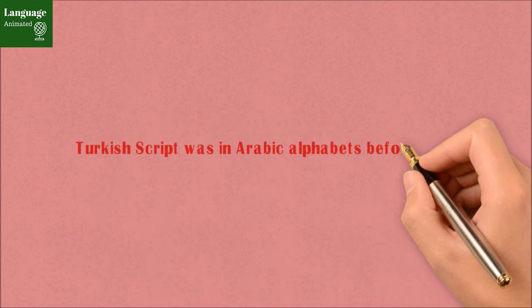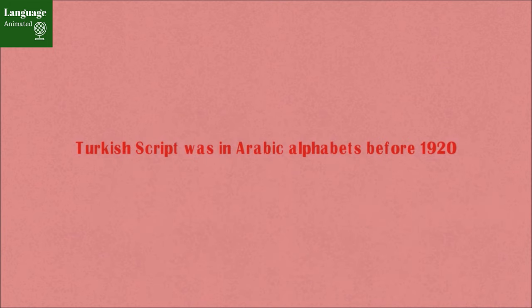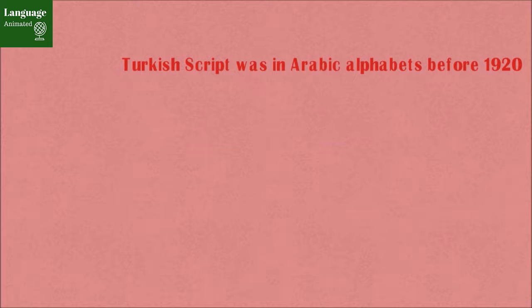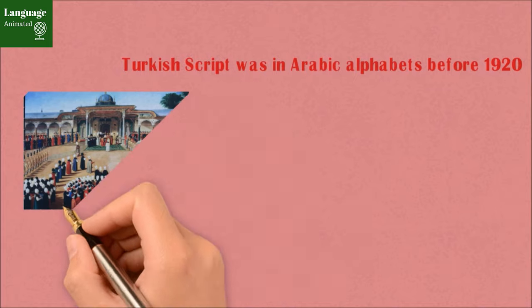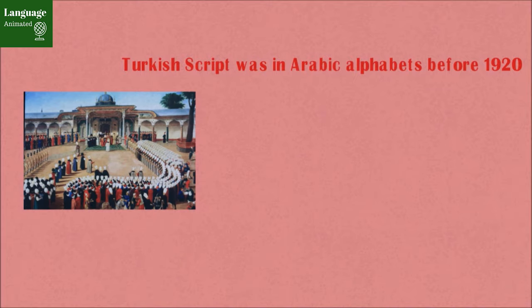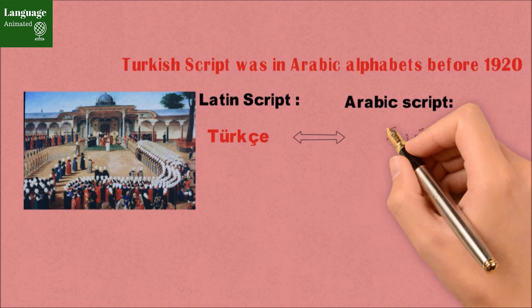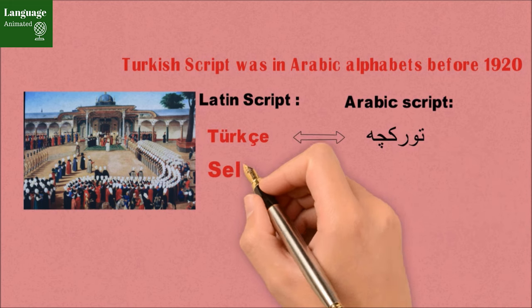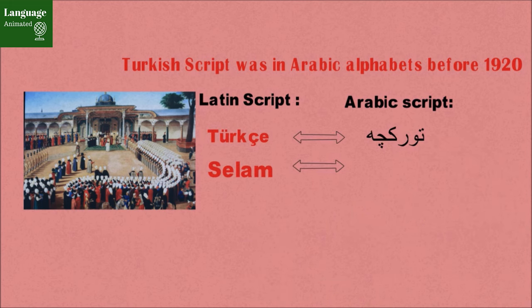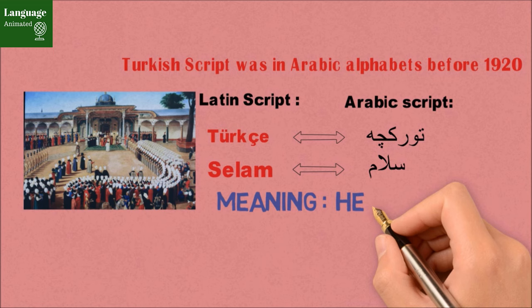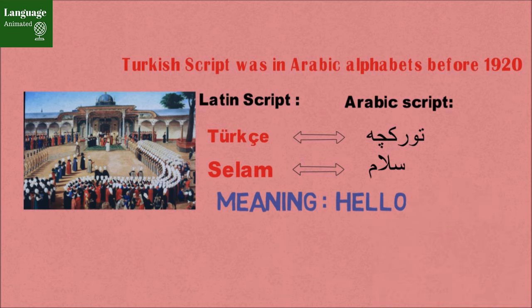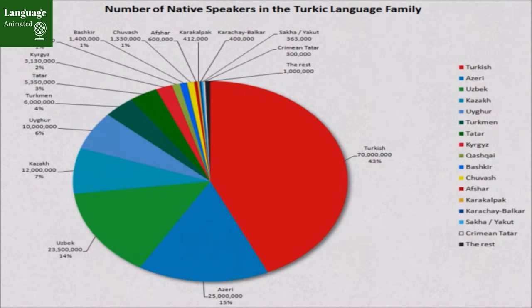Turkish was written with the Arabic alphabet before Turkey became a democratic country in 1920. In the time of the Ottoman Empire, Turkish was written in Arabic alphabets and mainly used Arabic words. There are many words imported from Arabic, Persian, and other Turkic languages.